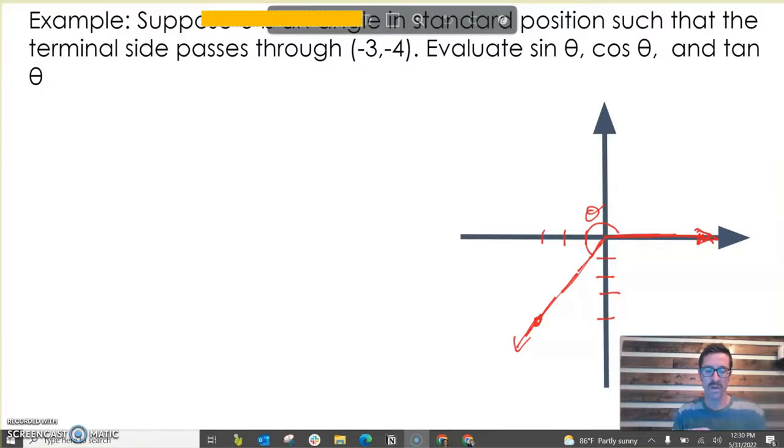Now if we're evaluating sine, cosine, and tangent, we need to think about what those mean. Sine theta is opposite over hypotenuse, or we've redefined it on the coordinate plane as y over r. Cosine of theta is x over r. And tan theta equals y over x, opposite over adjacent.